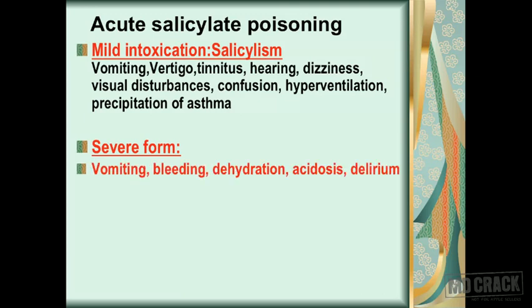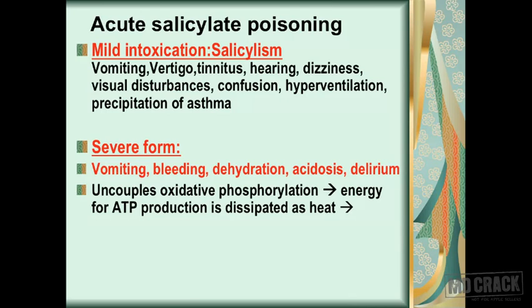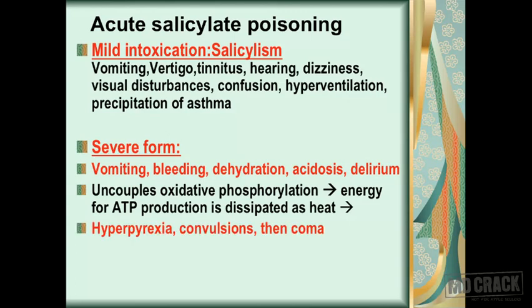The severe form of acute salicylate poisoning presents with vomiting, severe bleeding from various sites, dehydration, acidosis, and delirium. Aspirin starts uncoupling oxidative phosphorylation, and when oxidative phosphorylation is uncoupled, the energy meant for ATP production is dissipated as heat. As a result, body temperature starts rising — hyperpyrexia. So a drug used as an antipyretic to decrease body temperature, when given in very large doses causing severe salicylate poisoning, actually raises body temperature. The patient can get convulsions and then go into coma.